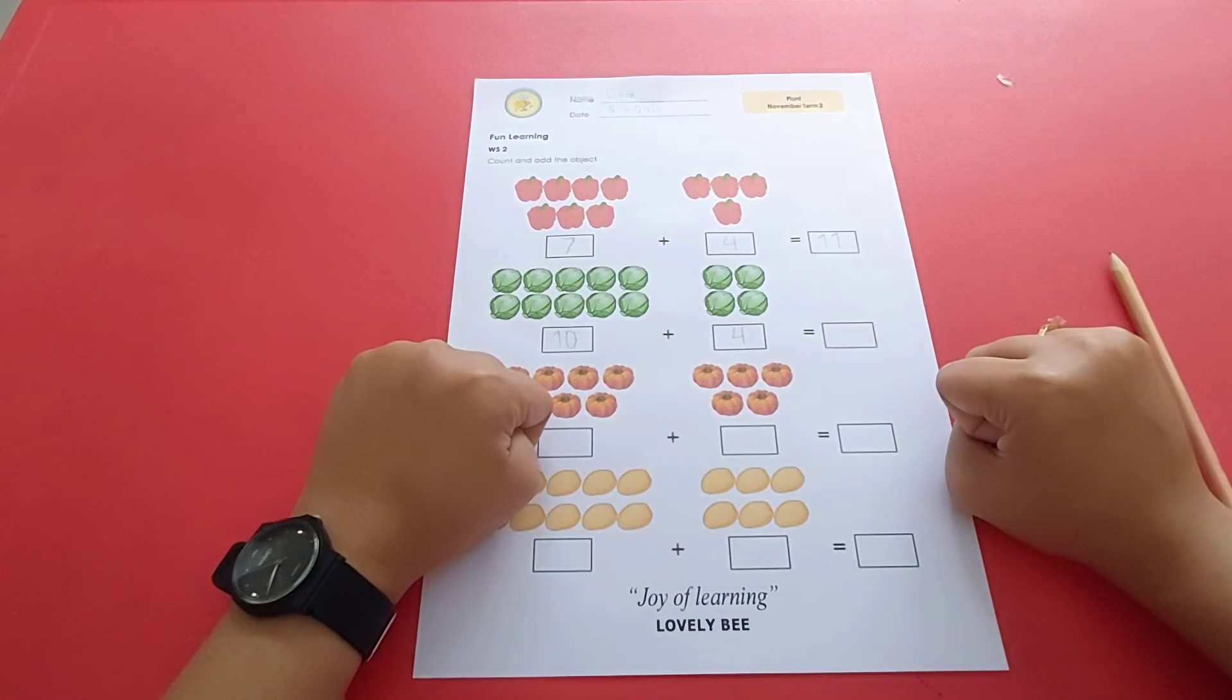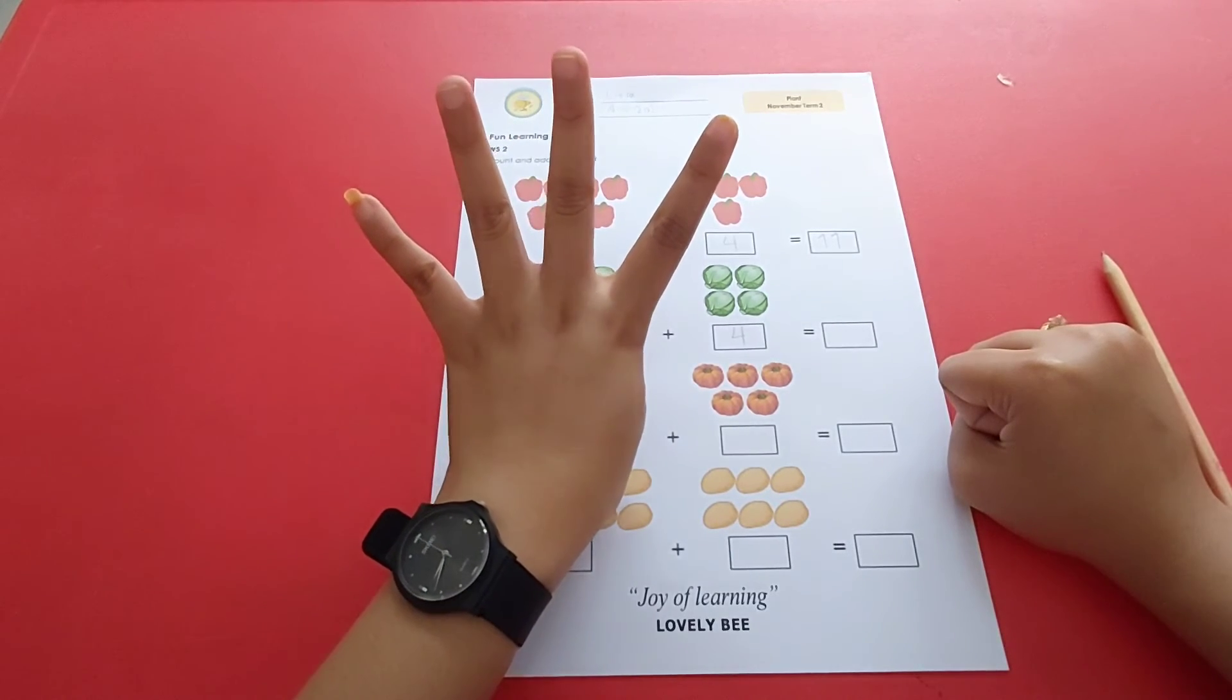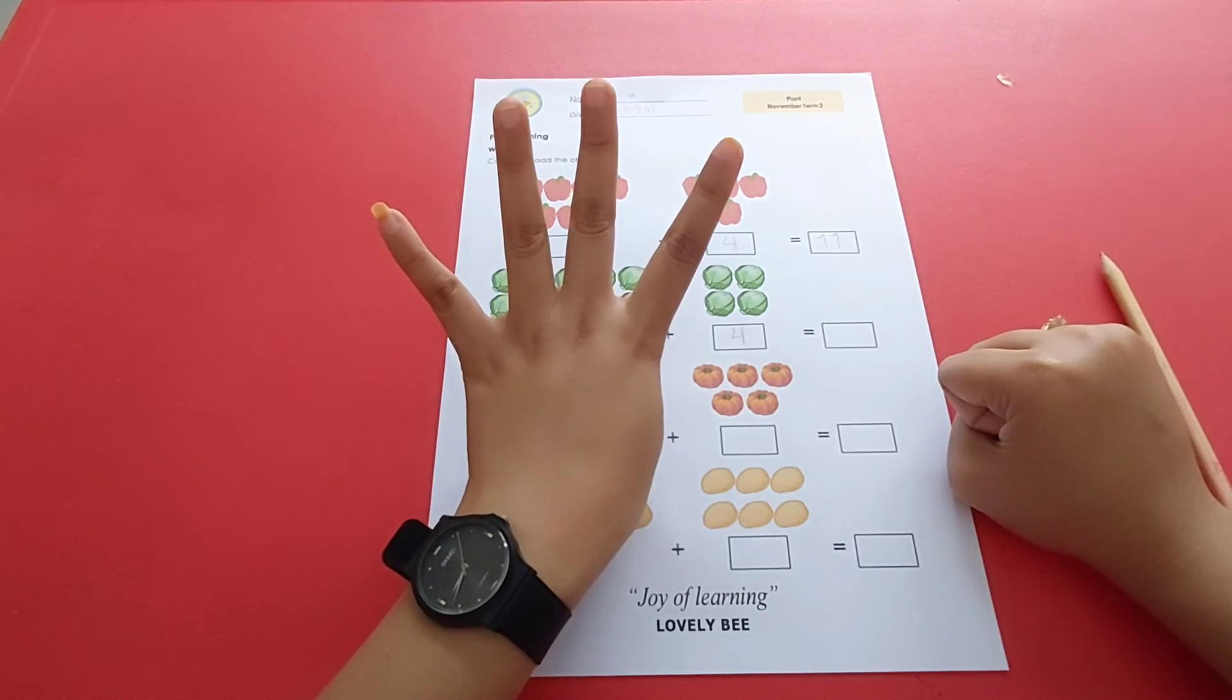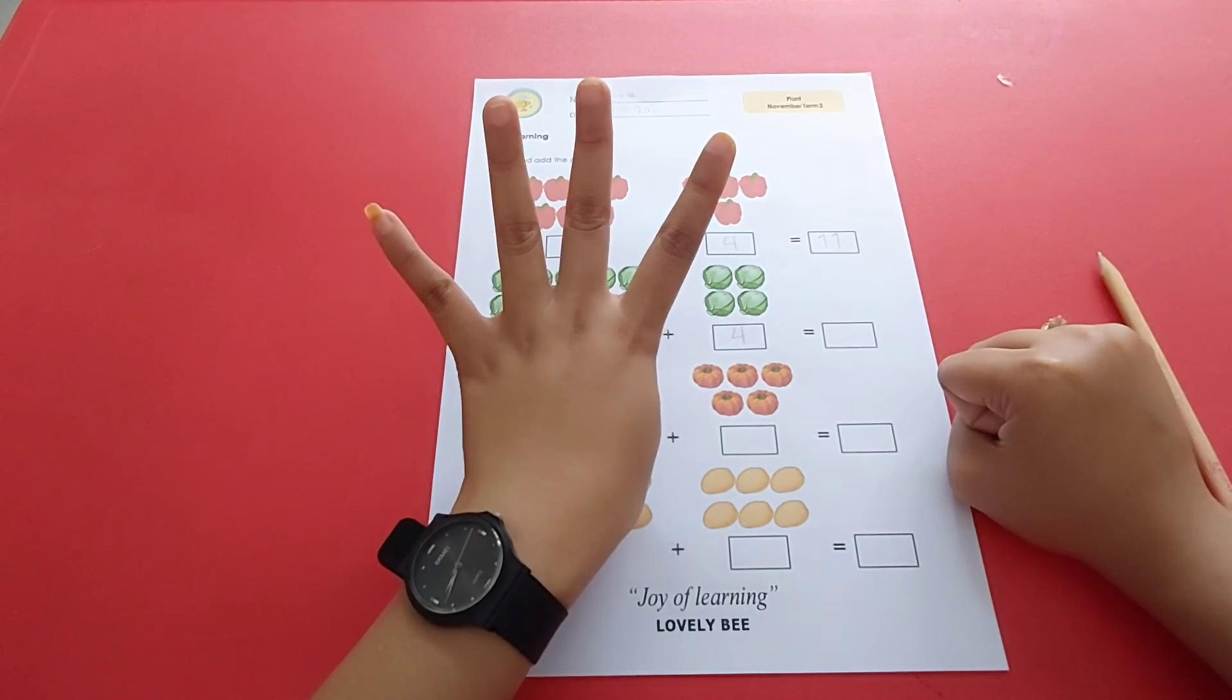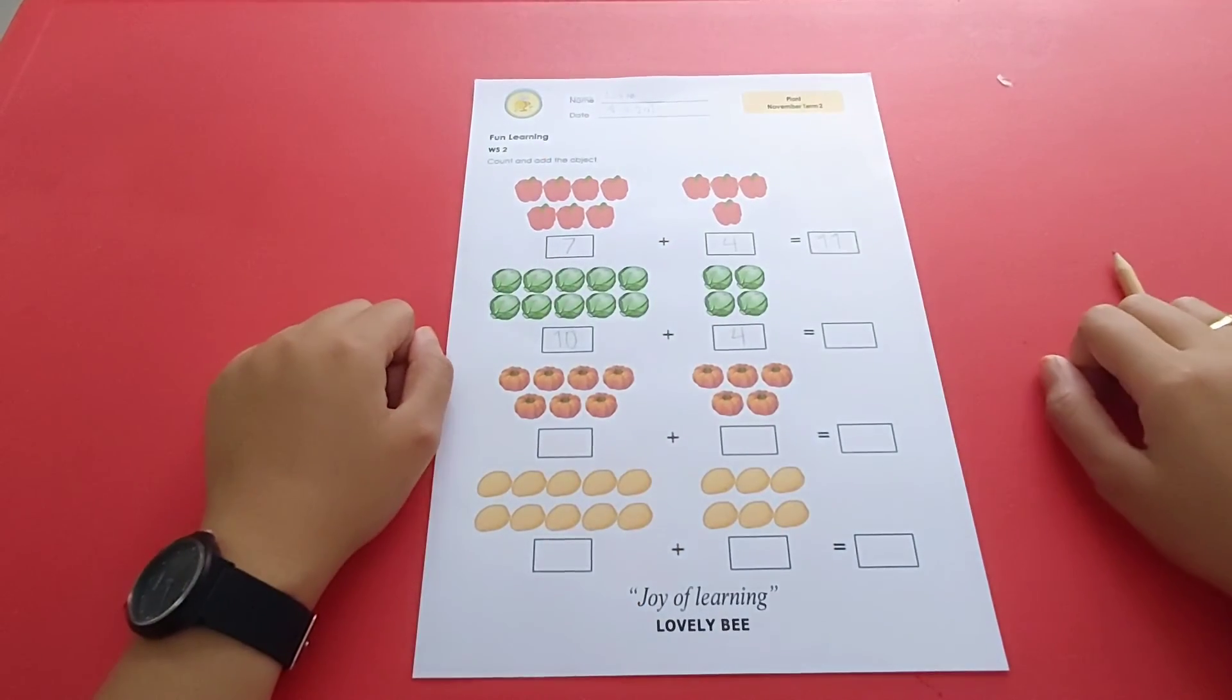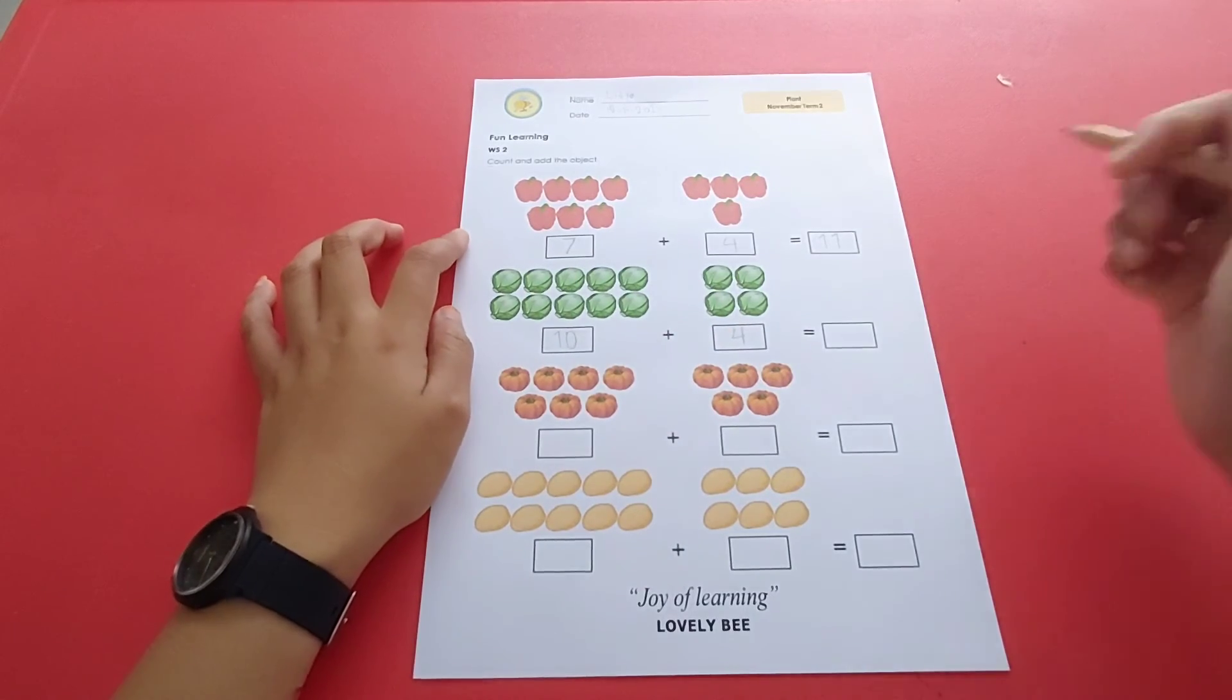Kita sudah memiliki angka 10 di dalam kepala kita. Sekarang kita buat angka 4 di tangan. Angka berapa setelah angka 10? Ya, setelah angka 10 adalah angka 11. Mari kita hitung: 10, 11, 12, 13, 14. Berarti 10 ditambah 4 adalah 14.